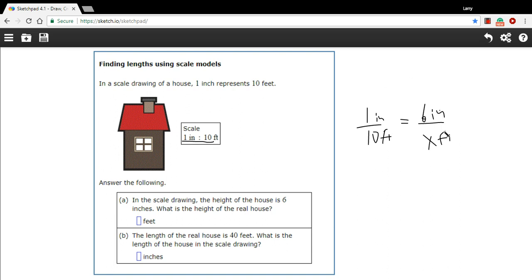So I've set up my proportion. Now I can cross multiply to solve for x. Well, 1 times x is just x. And 10 times 6 is 60.